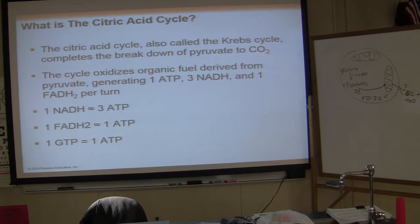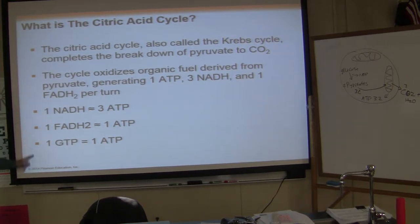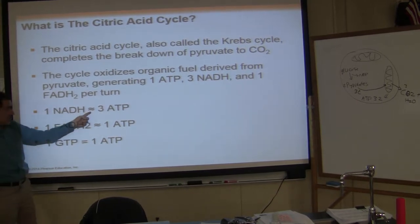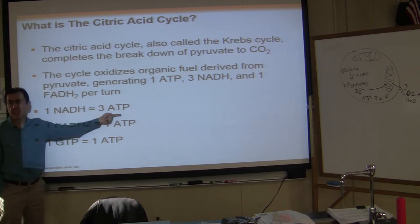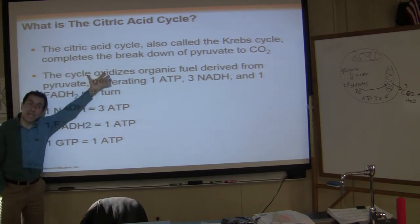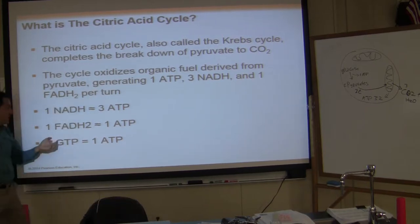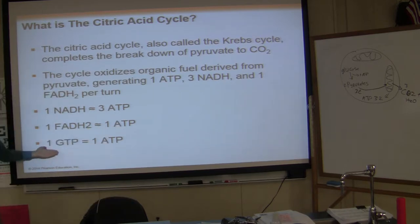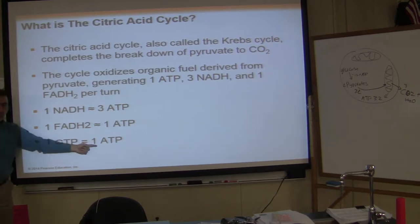Roughly, 1 NADH is equal to approximately 3 ATP — you will see how NADH is turned into ATP in a minute. 1 FADH is equal to 1 ATP. And 1 GTP is equal to 1 ATP. Are you ready to go through the Krebs cycle?